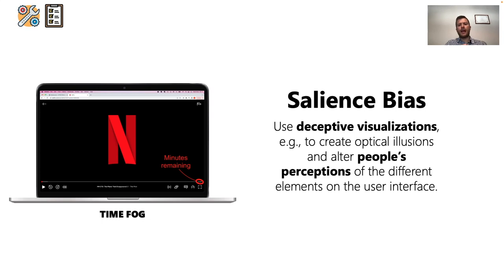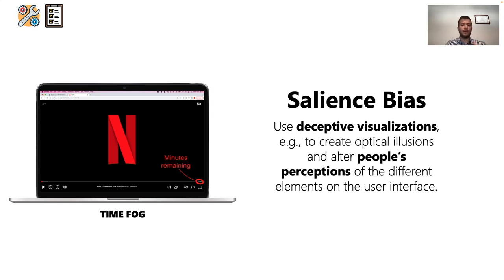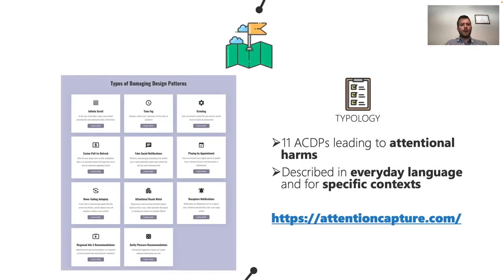Another psychological target is the salience bias — using deceptive visualizations in the user interface to alter the user's perception of their own actions. Here in the example there is the time fog pattern, through which designers reduce the possibilities for users to monitor and be aware of the time they spend on a service. Netflix, for example, decided to show the minutes remaining to complete a video rather than the elapsed time, providing users with incomplete information.